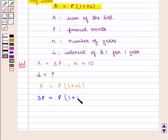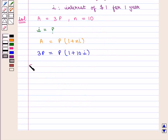Which implies that 3 is equal to 1 plus 10 into I, which can be written as R upon 100.